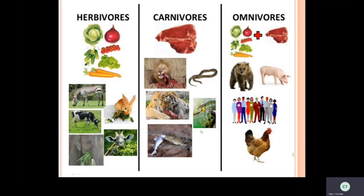Now see these pictures showing how animals are beautifully divided into three types. Herbivores — plant-eating animals: zebra, cow, elephant, giraffe, rabbit. Carnivores — flesh-eating animals: lion, tiger, crocodile, snake. Omnivores — plants plus flesh: bear, pig, human beings, hen. Did you understand, children? Very simple.